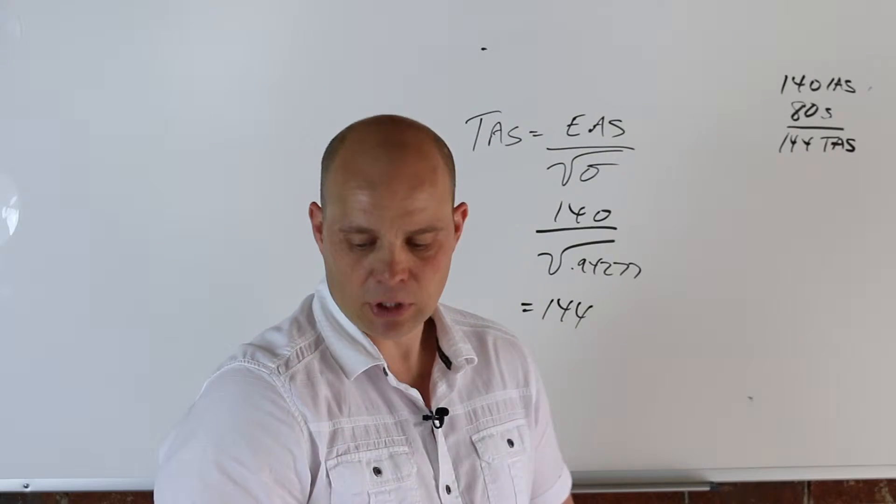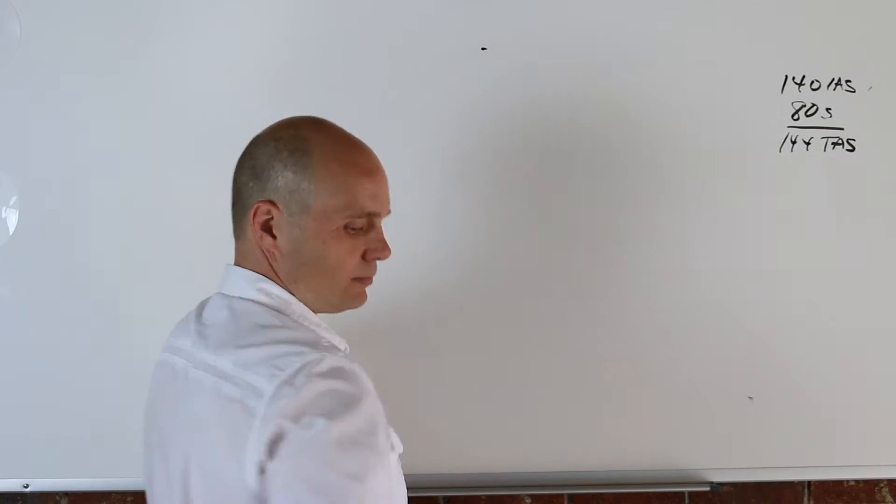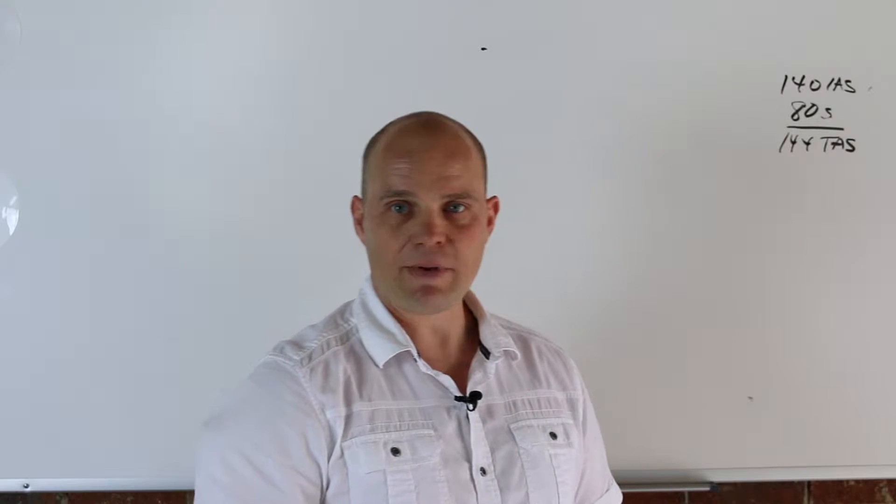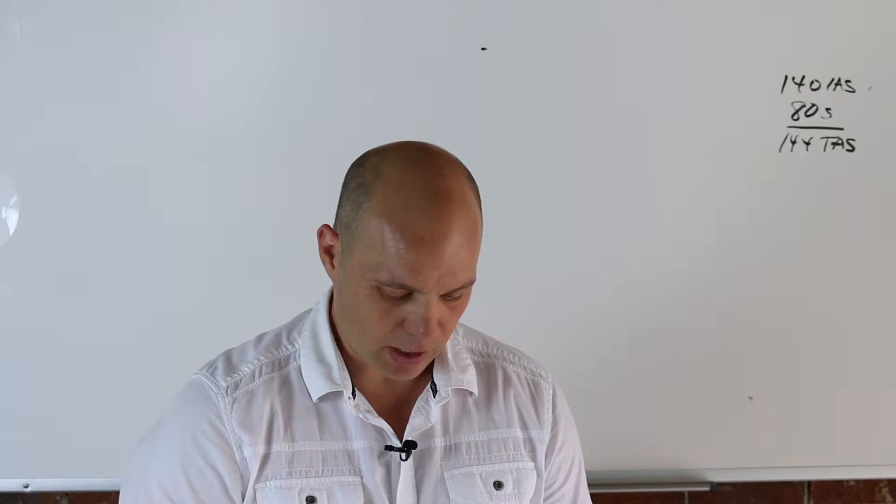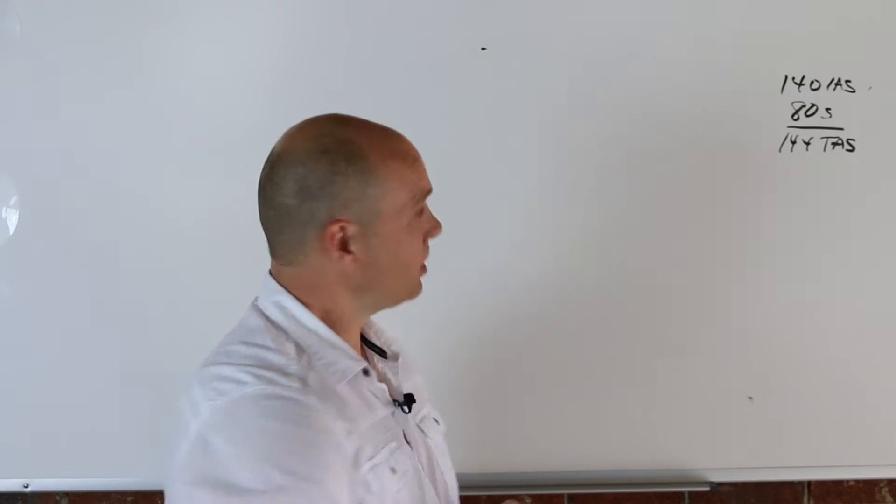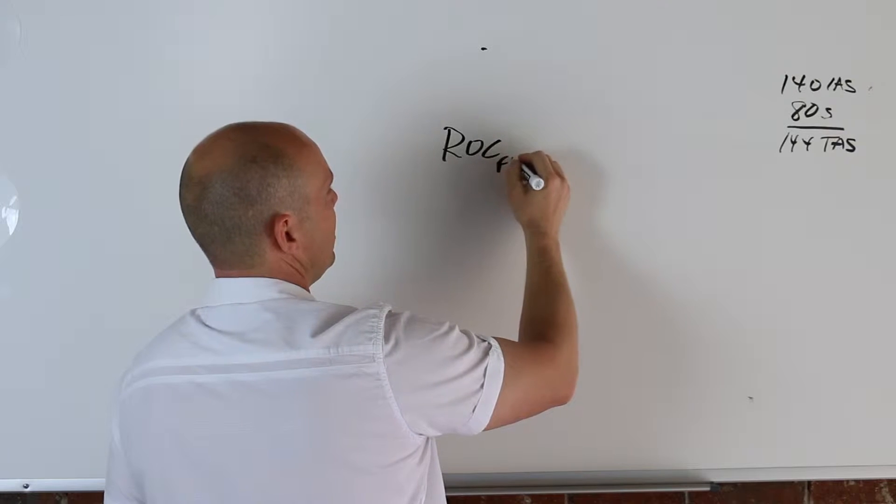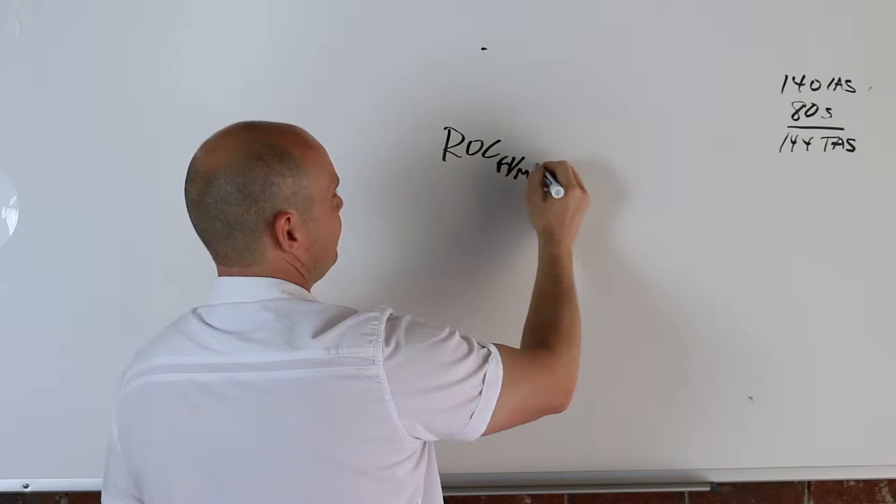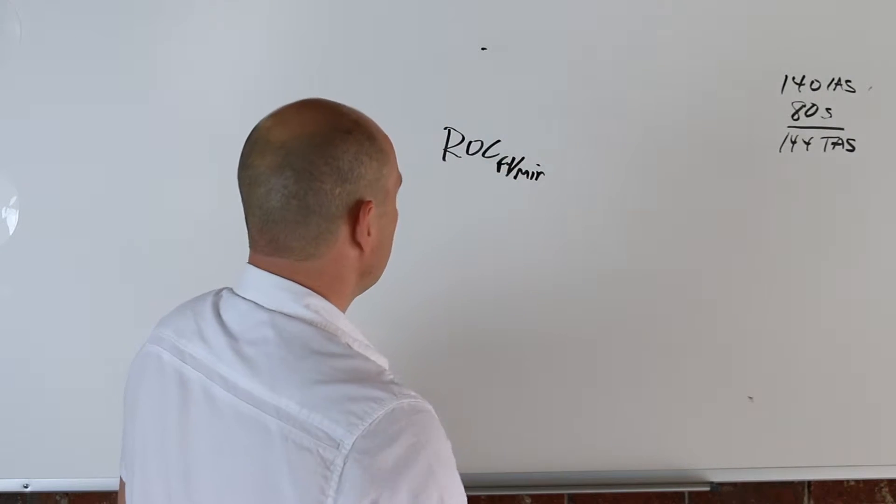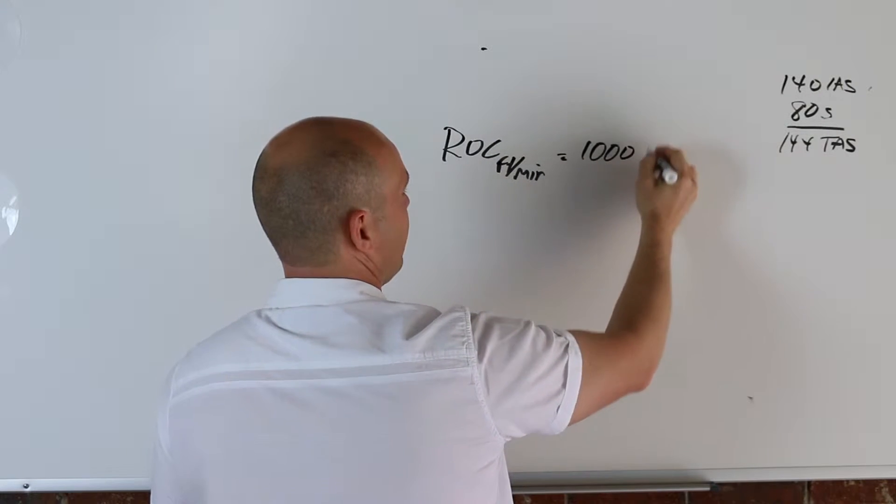Once we know that, we can now start to solve the rest of this table. Average rate of climb in feet per minute. For this particular one, rate of climb in feet per minute, so you're going to go up 1,000 feet, climbing up 1,000 feet. And we're going to do it in 80 seconds.